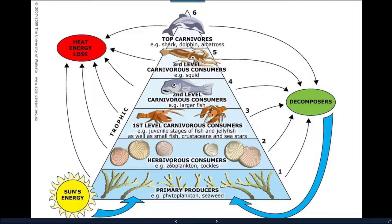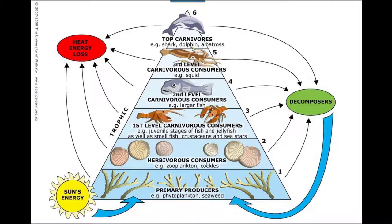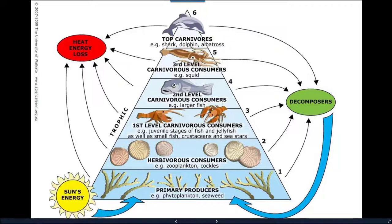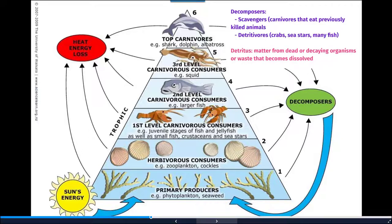At each of these different levels, there are contributions to decomposition — these organisms all die and are broken down by decomposers. There's always an energy loss, a heat energy loss, that occurs at each level. Energy input is largely from the sun, and you end up with heat loss at each level. Detritus is matter from dead or decaying organisms or waste that eventually becomes dissolved and is worked into things like the nitrogen and carbon cycle.